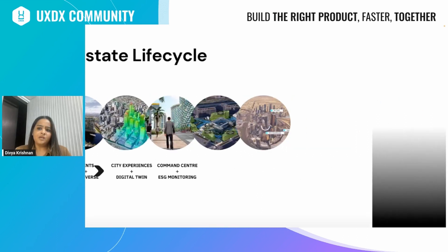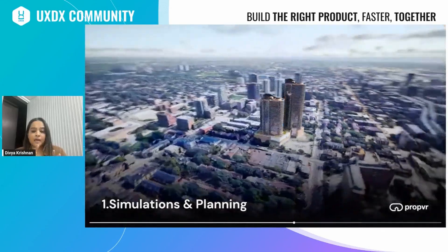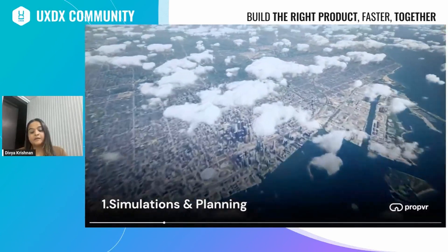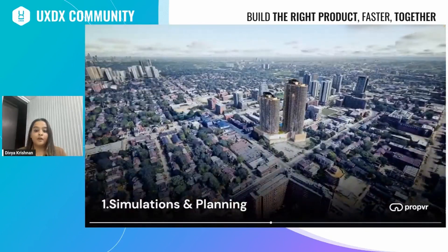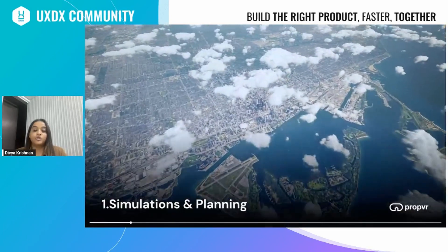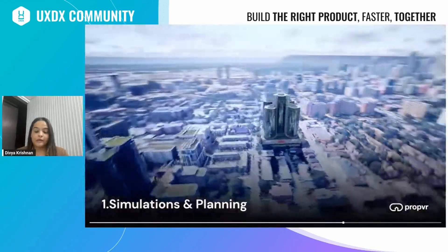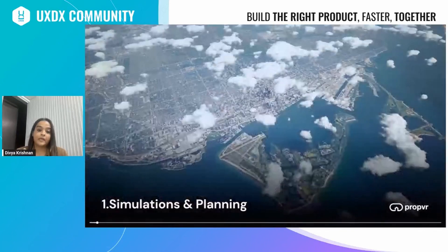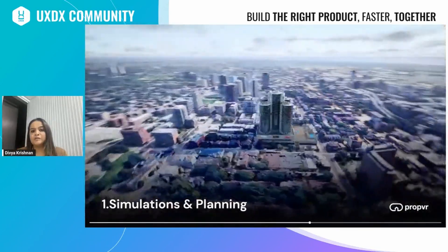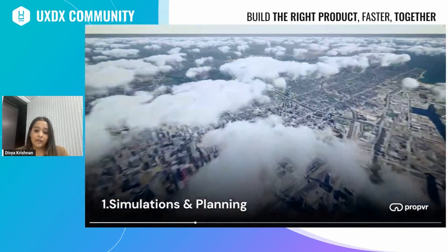Let's zoom into some of the main use cases, starting with simulation and master planning. Digital twins let us place properties within 3D GIS maps and run what-if scenarios, simulating demographic changes. Imagine testing architectural designs to find out which performs best based on quality of light — how many units get the best light, what the air circulation is like, financial yield, number of units you can build in a given area, or how a single tower versus double tower model would look.